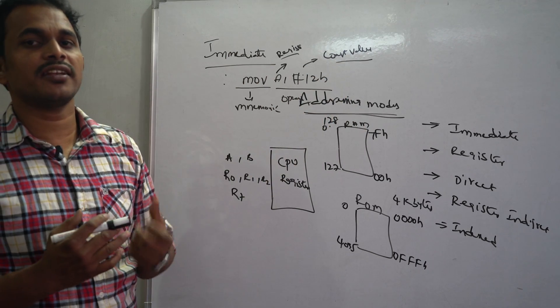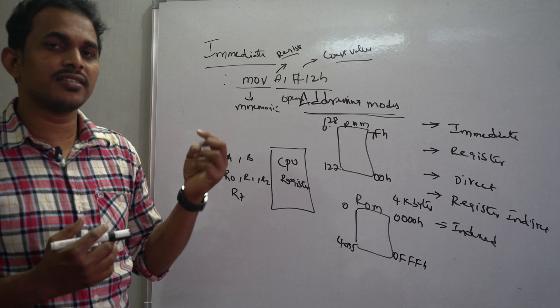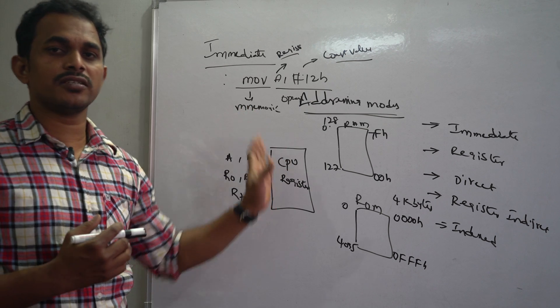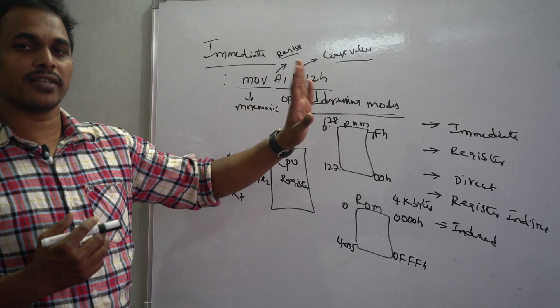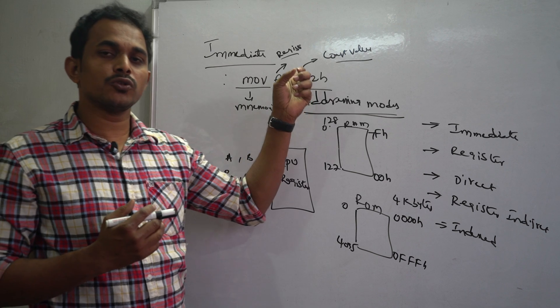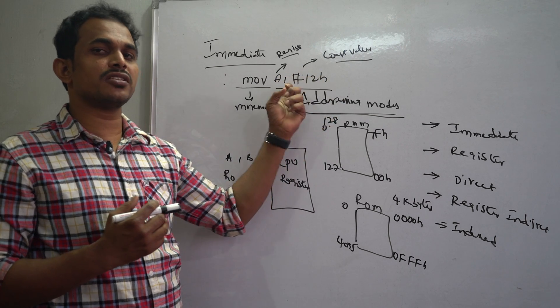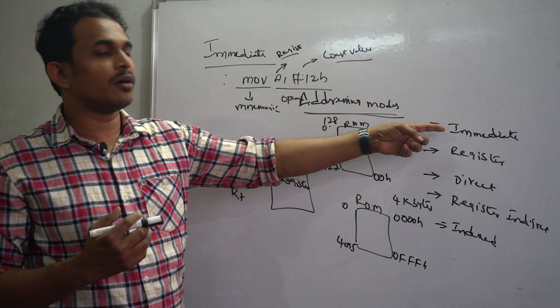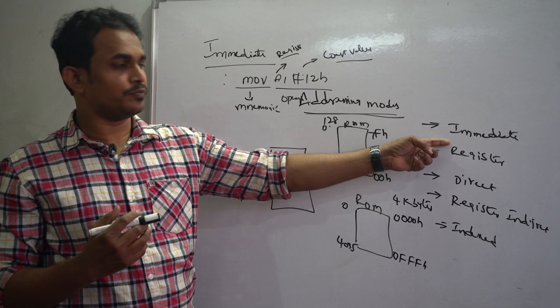Immediate addressing mode is the way of accessing data. If you want to access a constant value into a register or into memory, it comes under immediate addressing mode.